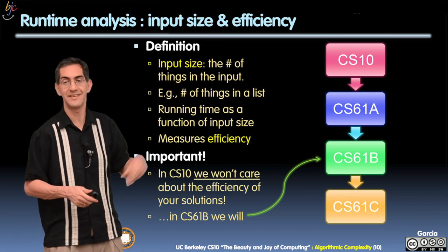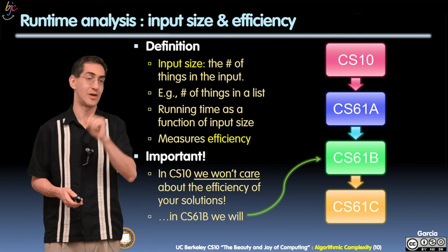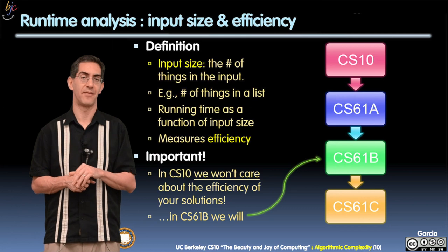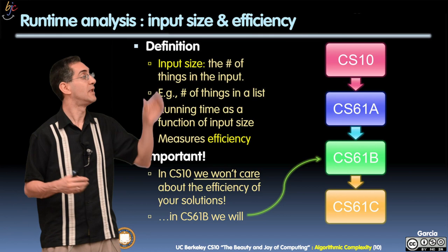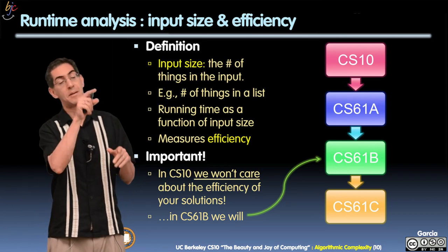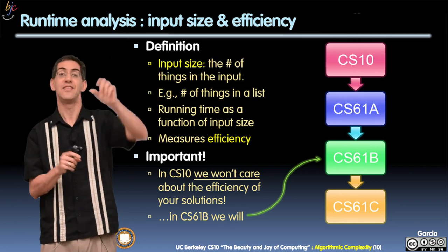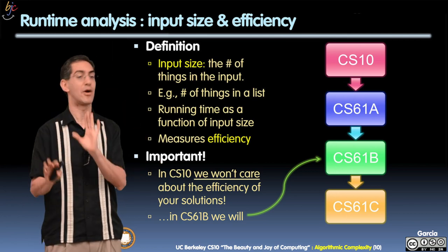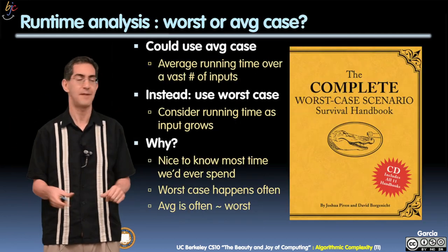So running time is a function of input size. We're measuring efficiency. The important thing is, in this class, we really don't care ever that you write efficient code. Only in 61B will we care about that. So that's like two classes from now. But it's important that you know, be able to look from afar and say, that algorithm, that's this level of running time, and that one, that's this level. So you need to be able to look at things and kind of point at them and label them, but not worry about writing them yourself. We'll never ask you, rewrite this more efficiently.